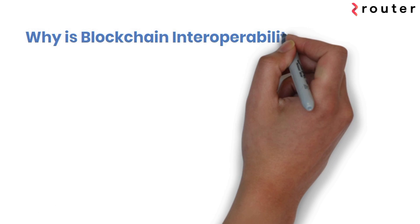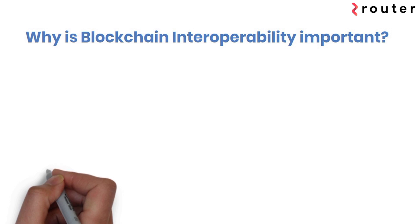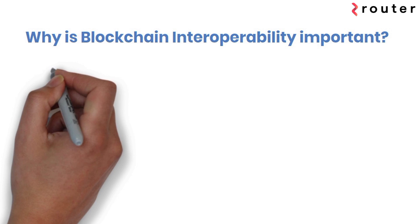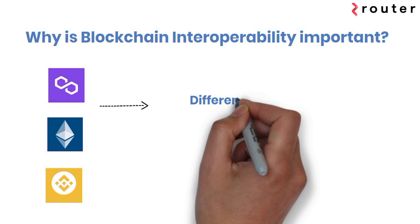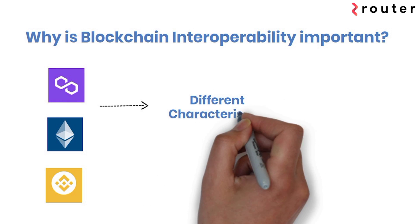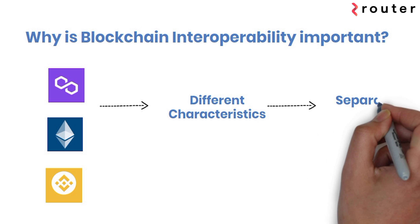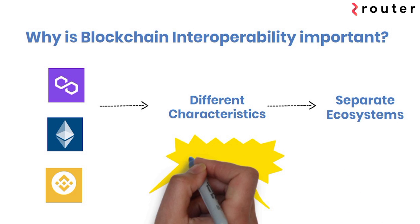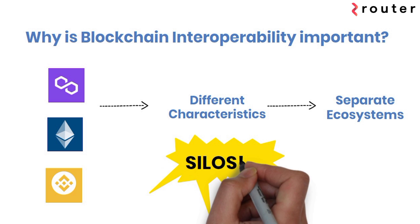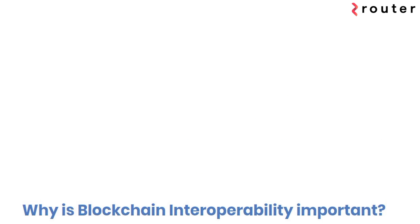Why is blockchain interoperability important? Different blockchain networks have isolated liquidity pools working in separate ecosystems, which has resulted in a series of unconnected blockchain ecosystems that end up creating silos.